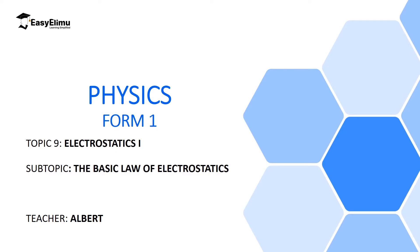Welcome to ECLIMU Learning Simplified and welcome to this lesson. In the previous lesson we discussed types of charges and we said we have only two types of charges: positive charges and negative charges. We also looked at how we can make a material become positively charged — we subtract some electrons from that material, which is electrically neutral, so the number of protons will be more than the electrons, and we obtain a positively charged material.